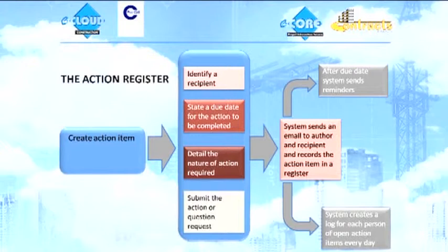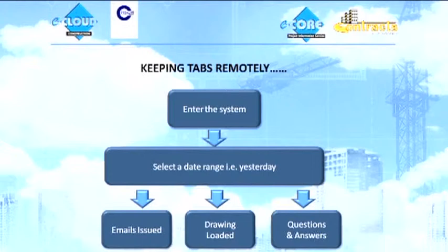So you create an action item. You identify a recipient. You state a due date. You detail the nature of the action required. I want a drawing from you, Mr. Architect. And submit the action to the system. The system then takes over and sends an email to both parties. On the due date, it starts sending out reminders. And in the interim, it compiles a log of every single action that has happened. And it tells you how well you're doing. So I can tell you that on average, you have received 400 action items and you've answered them on average one and a half days after the due date.